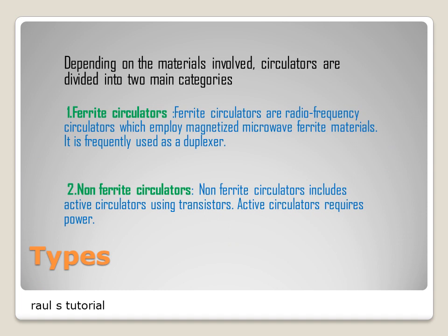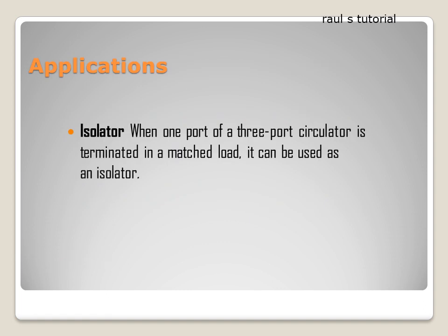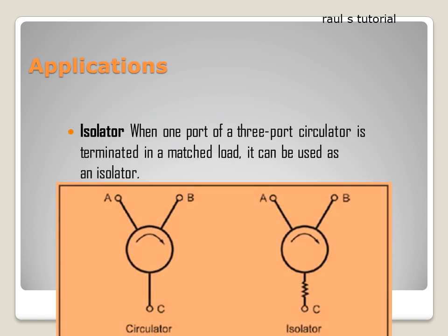Types: Depending on the materials involved, circulators are divided into two main categories. First, ferrite circulators — these are radio frequency circulators which employ magnetized microwave ferrite materials, and are frequently used as a duplexer. Second, non-ferrite circulators — these include active circulators using transistors, which require power.